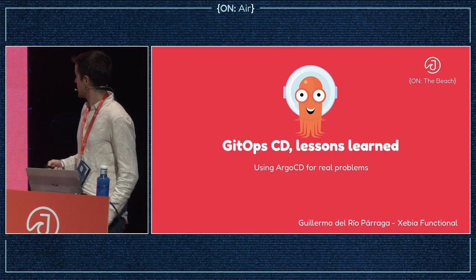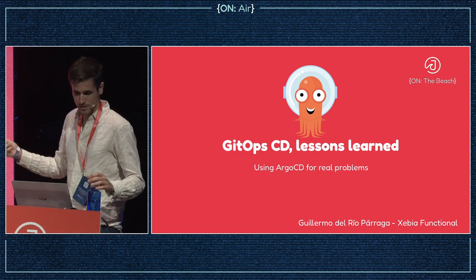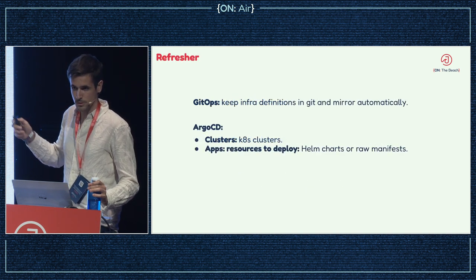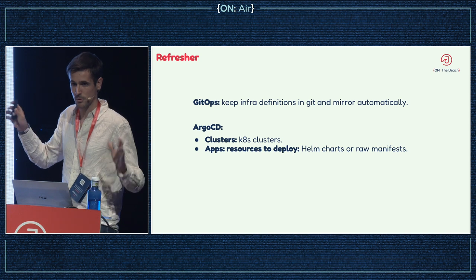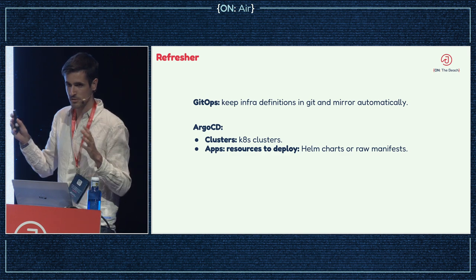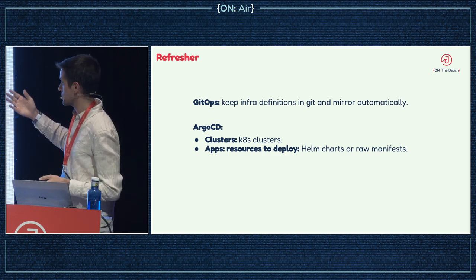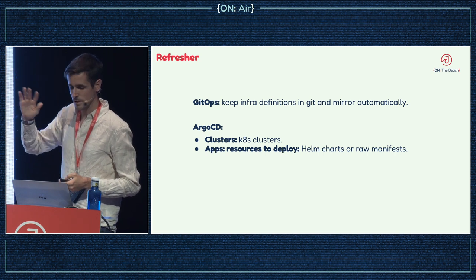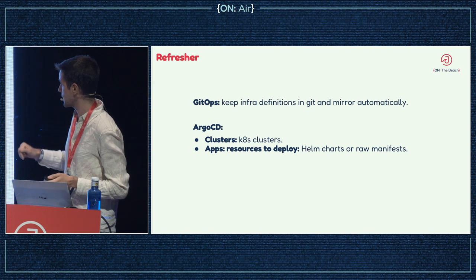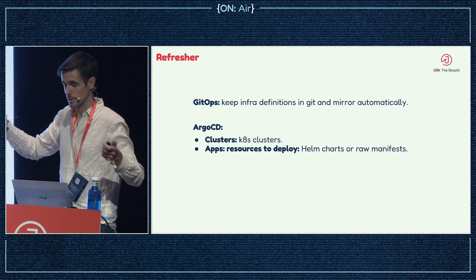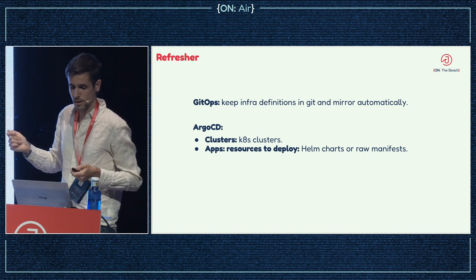Thank you everyone. This talk is about GitOps on Kubernetes — lessons learned. As a quick refresher in around 100 seconds: the core idea is keeping definitions of different infrastructure resources in separate repos for similar scenarios, and having those automatically mirrored onto our target — in this case, our Kubernetes clusters.